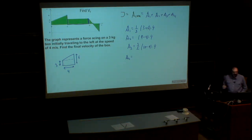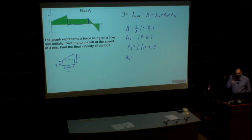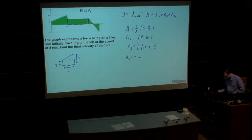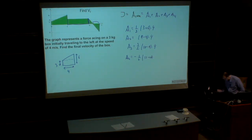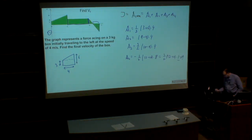Area four is tricky because it's below the x-axis. Physically, it means the force changed direction to the opposite. Mathematically, we treat this area as a negative number. It's a triangle: one half times (12 − 10) times 8, or equivalently one half times (12 − 10) times (−8). Either reasoning gives the same result.